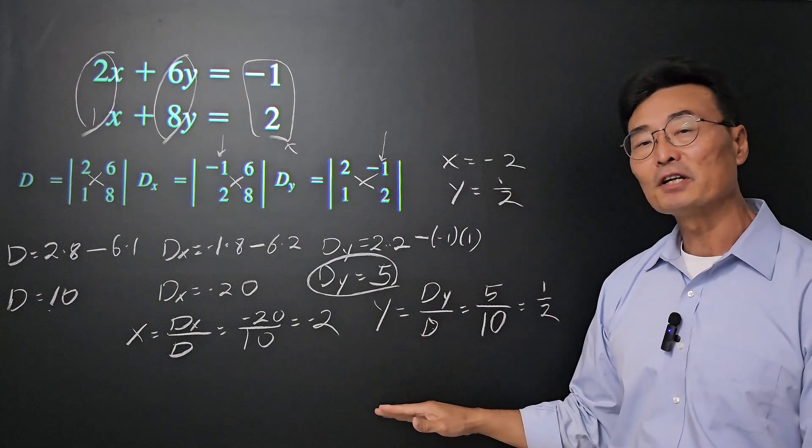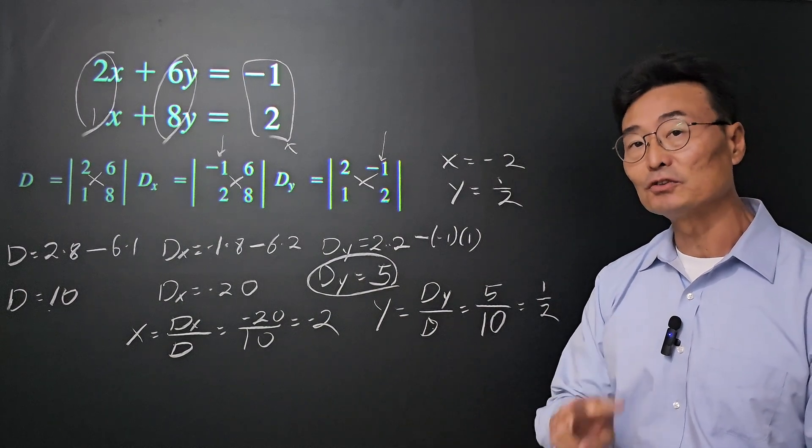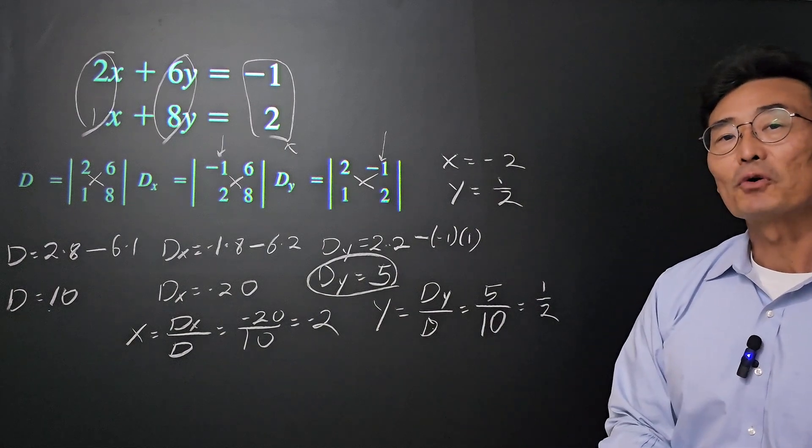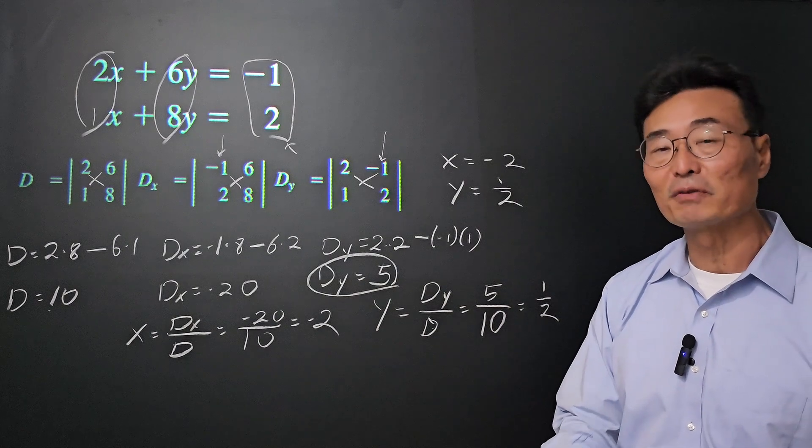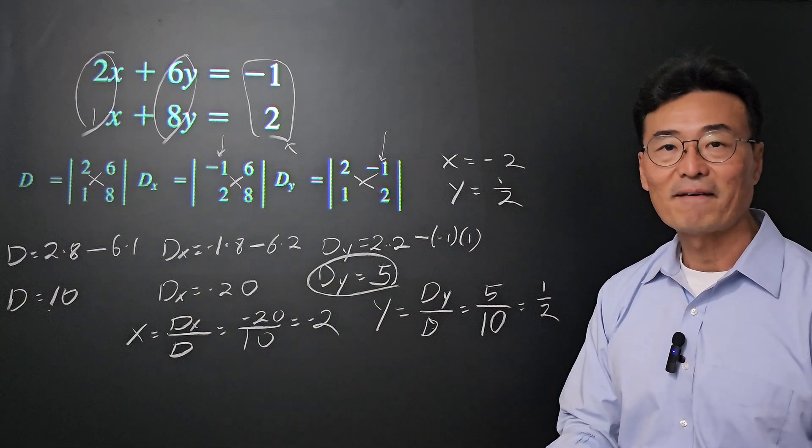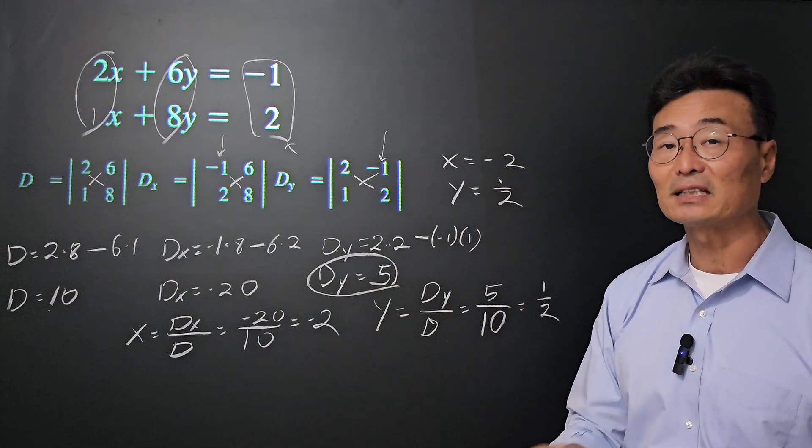The reason for learning Cramer's rule using matrices is not for two variables. Rather, it's for when you have three variables with three equations or even four variables with four equations, where it gets very difficult and time-consuming.